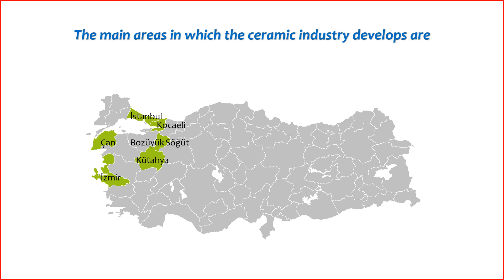5. Bozüyük — located in western Turkey, is home to ceramic companies engaged in the production of tiles and sanitary ware. The city's proximity to major urban centers contributes to its significance in the ceramic industry. 6. Bilecik — recognized for its ceramic and tile manufacturing activities, with a cluster of ceramic factories producing various ceramic products. These regions have become focal points for ceramic production due to factors such as raw material availability, skilled labor, infrastructure, and historical expertise in ceramics. The industry's growth in these areas has contributed to Turkey's reputation as a significant player in the global ceramic market.